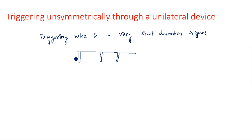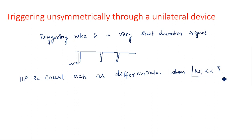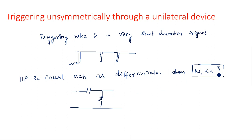Now, who will generate the triggering pulse? A high-pass RC circuit, which we studied at the beginning of pulse and digital circuits, acts as a differentiator when the time constant RC is less than the input signal time period T. This high-pass RC circuit — capacitance followed by resistor — is used to produce the triggering pulse.